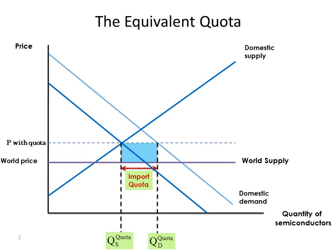The quantity supplied domestically is the same. The amount imported by definition is the same. The only difference is now there's no tariff revenues — instead we have quota rents.